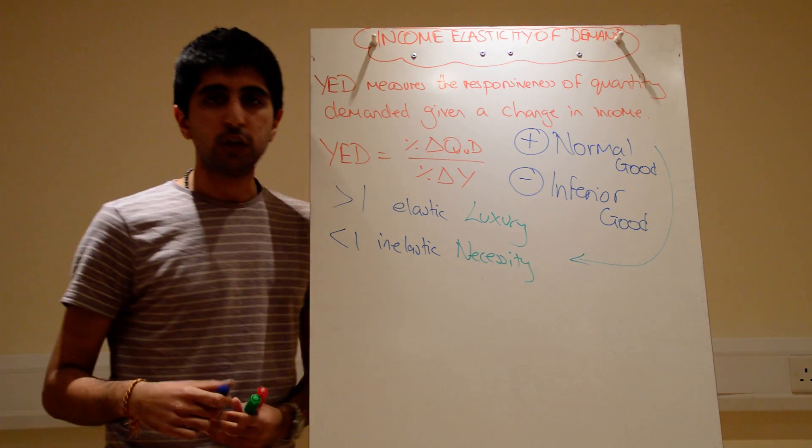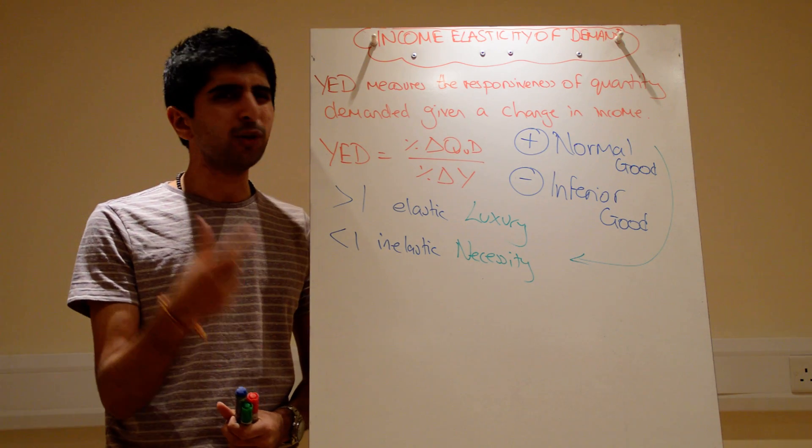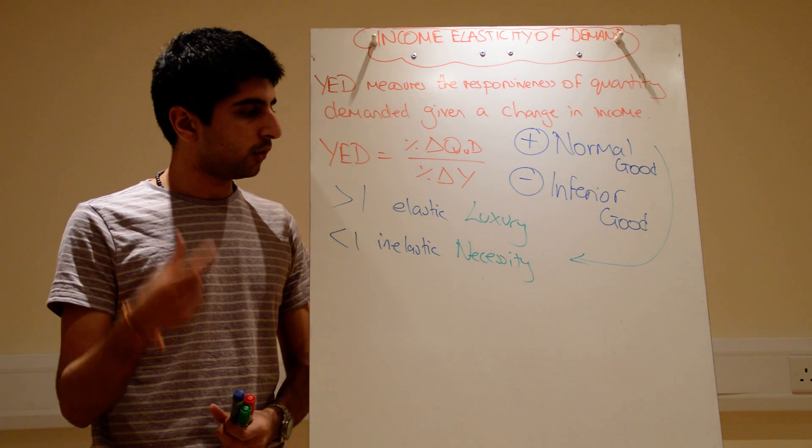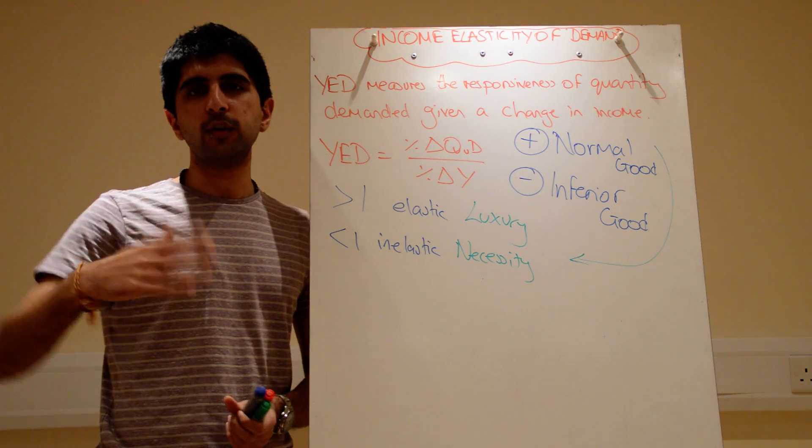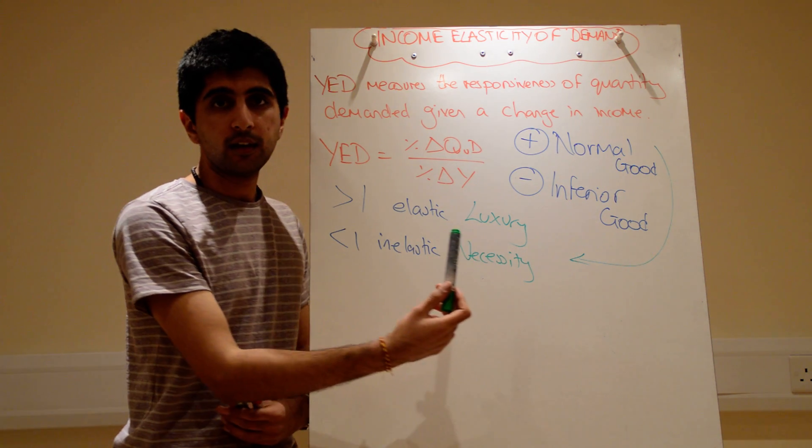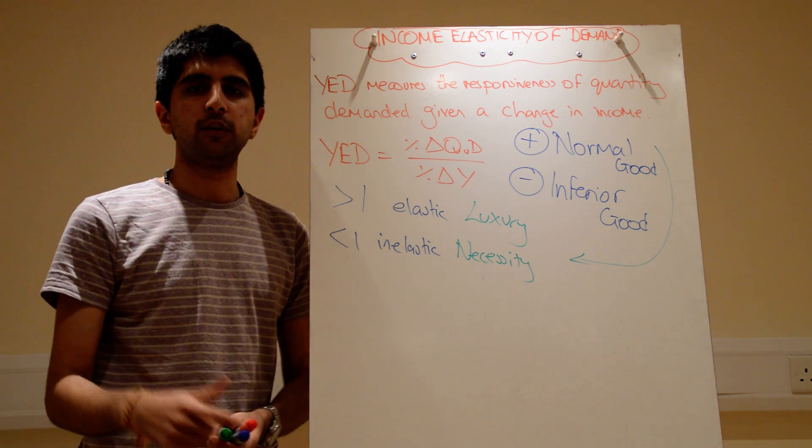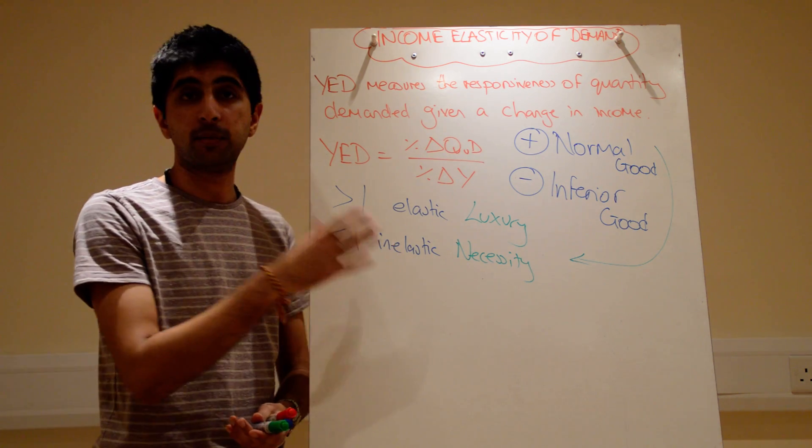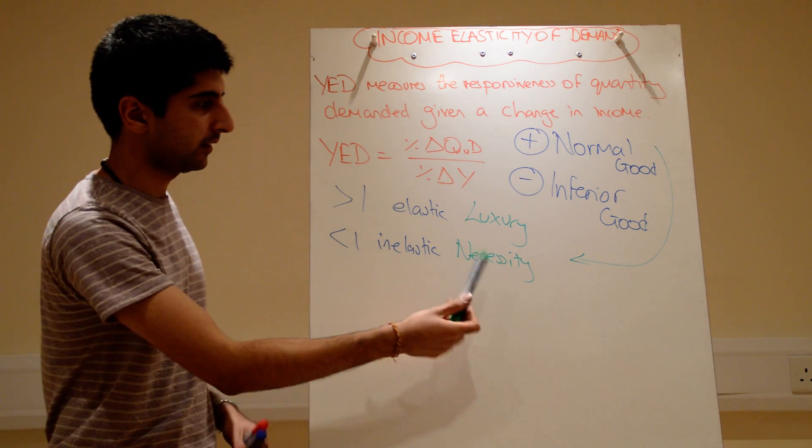Whereas for a necessity, your income goes up. Yes, you still want to buy, but not very much. So, your demand doesn't change massively even though your income has gone up. So, it must be a necessity. You don't flock to buy it just because your income has gone up. Meaning, you might have been buying it before anyway. It's a necessity.